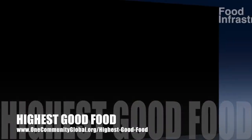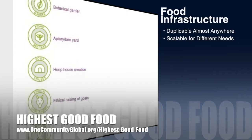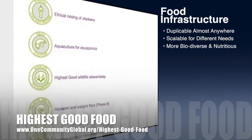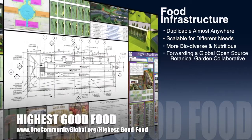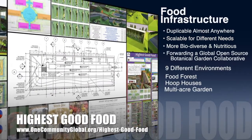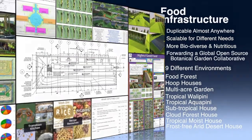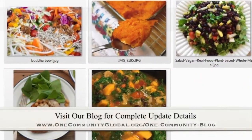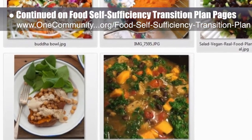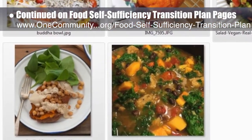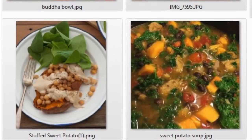One Community's approach to highest good food is duplicable almost anywhere, scalable for different needs, more biodiverse and nutritious, part of forwarding a global open source botanical garden collaborative, and includes nine different free shared and duplicable growing environments. This week the core team continued work on food calculations on the food self-sufficiency transition plan pages and created three more days of recipes and food intake for a 130-pound female, as shown here.